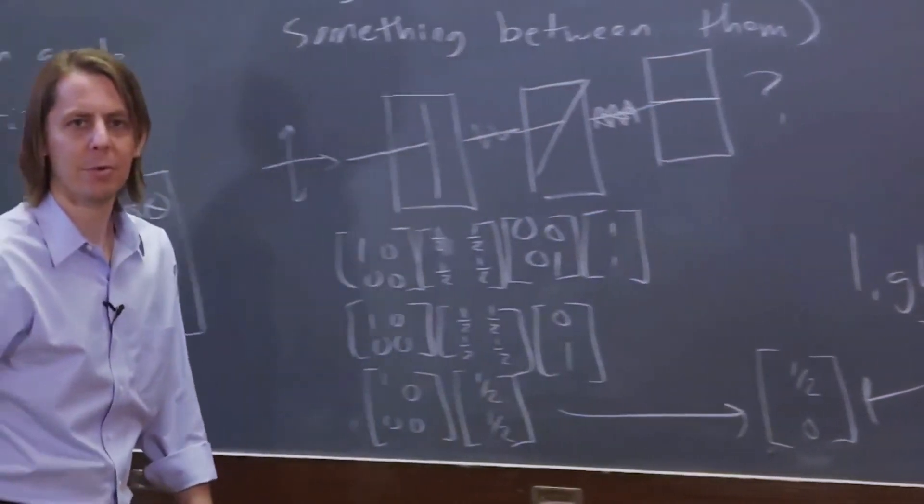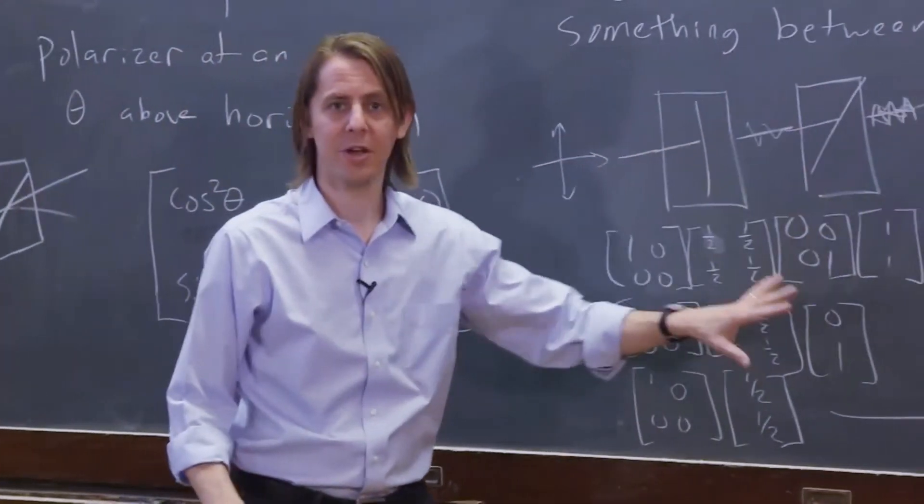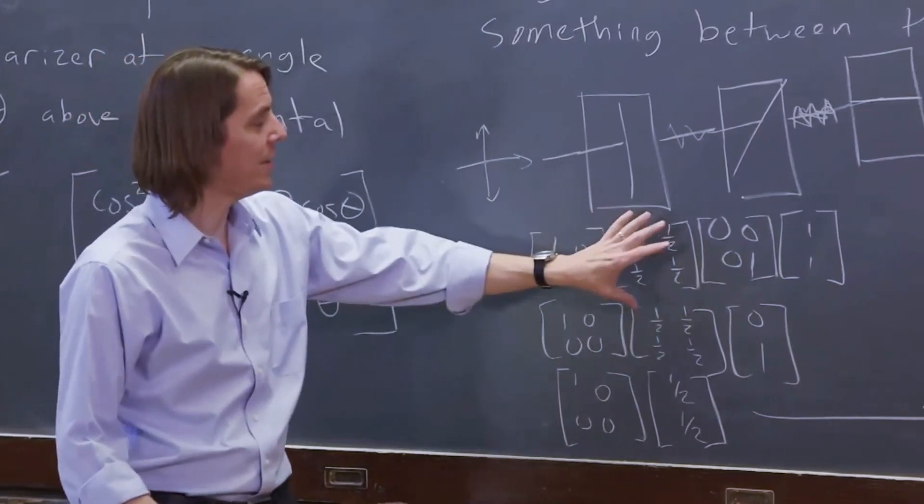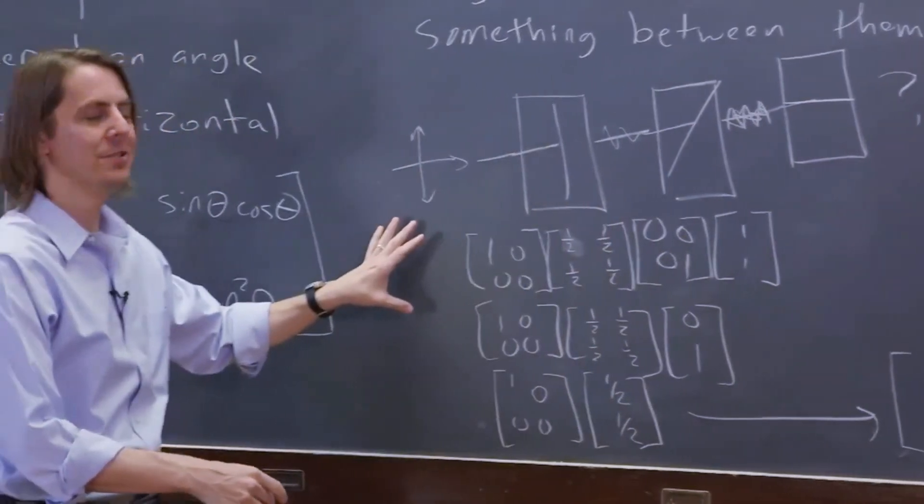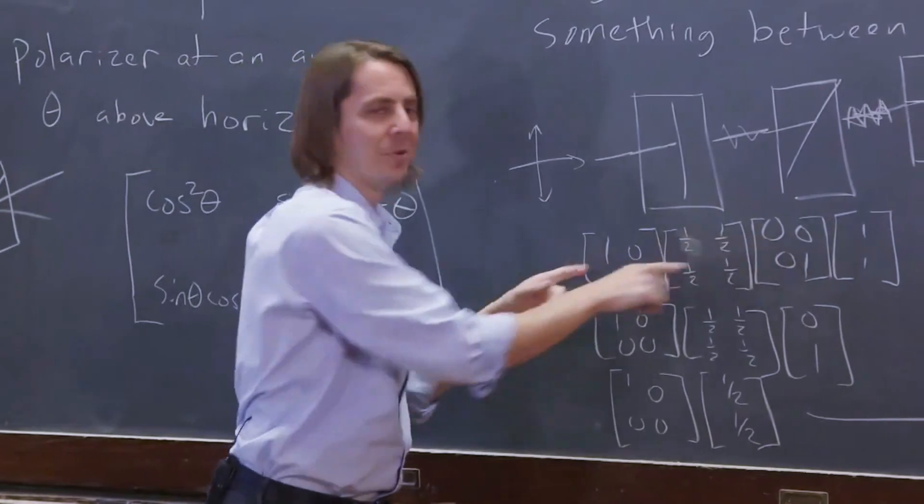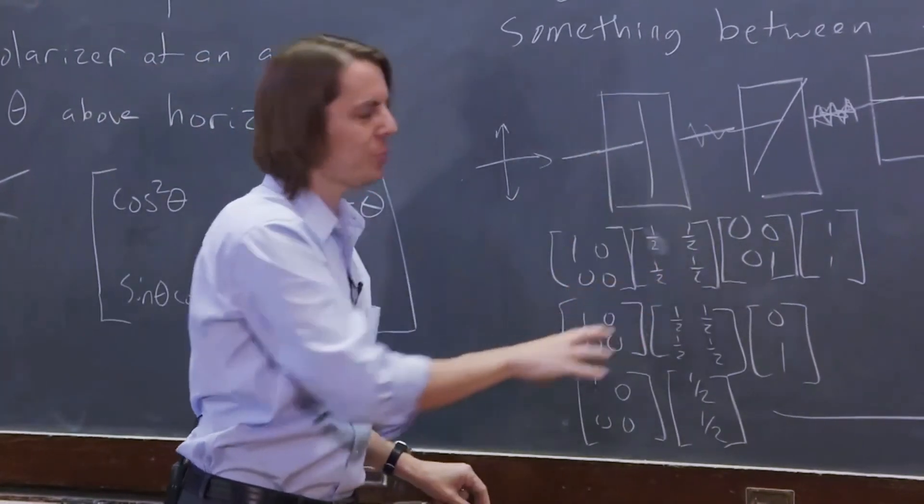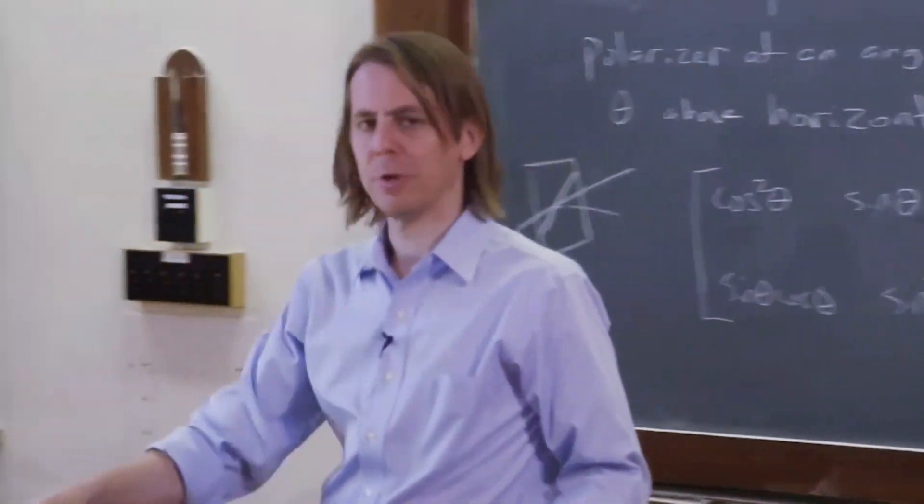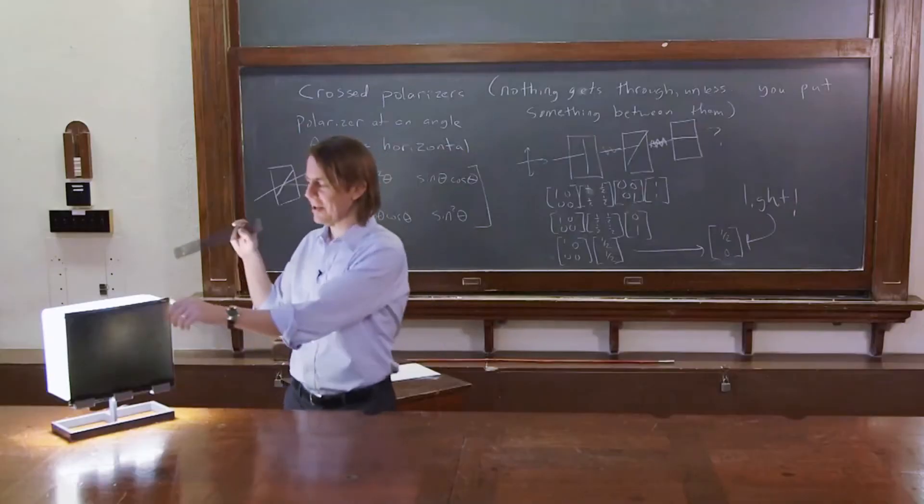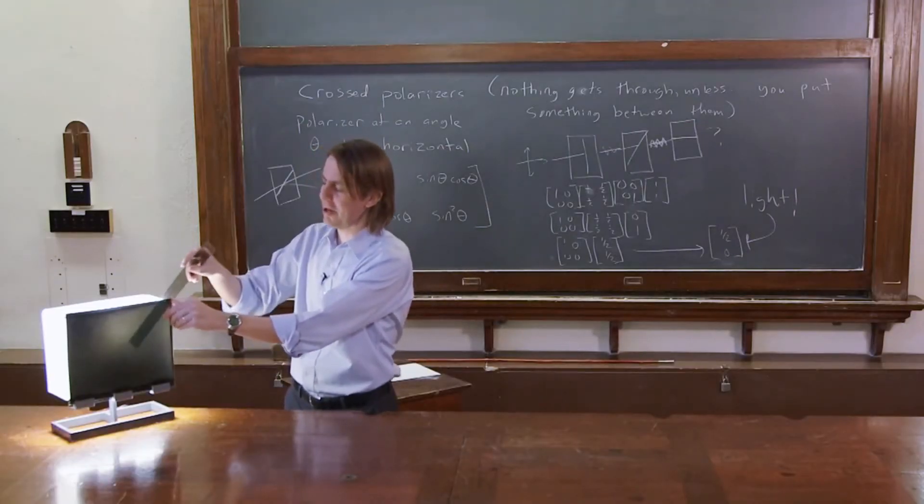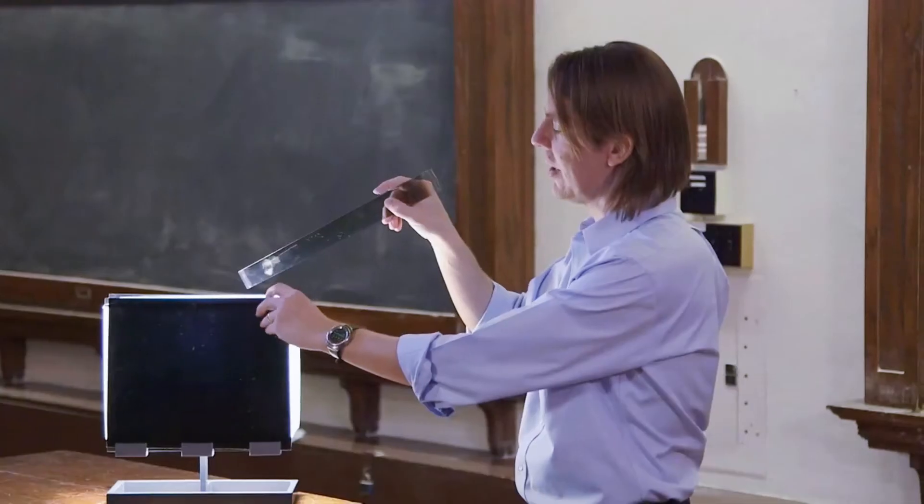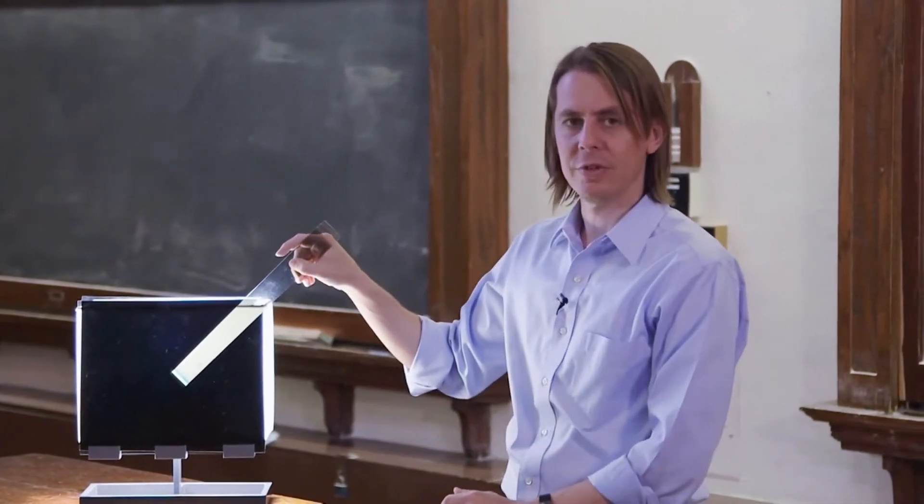So something does get through according to the Jones calculus. If we had multiplied these out of order, you'd get 0. As soon as you do this one times this one, you always get 0. But just like in the physical world, if we put something in between, you don't get 0 anymore. So the math is the same as the reality. If you put it behind, you get nothing. If you put it in front, you get nothing. If you put it in between, then some light gets through.